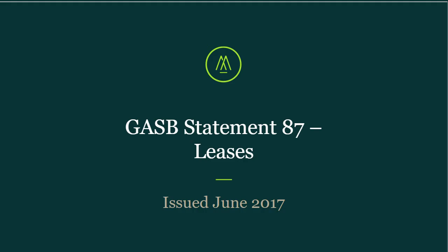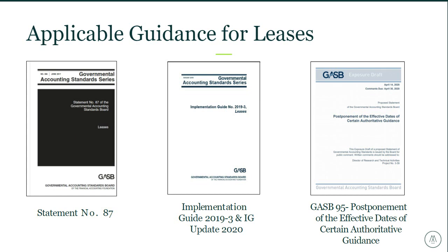The first standard we're going to walk through today is GASB Statement 87, which was issued back in June of 2017. There's quite a bit of guidance related to GASB 87, including the standard itself, Implementation Guide 2019-3, and Implementation Guide Update 2020. The standard was delayed by GASB 95, the postponement of effective dates, and is now effective for June 30, 2022 year-ends and forward.